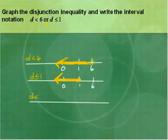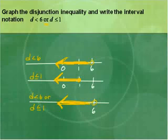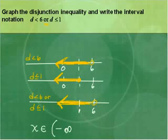Putting the two graphs together — for OR, you combine everything. When we do that, we have an open circle on six moving to the left, which covers the one, so we don't need to show it separately. The solution is an open circle on six moving to negative infinity. The interval notation is (−∞, 6), with a parenthesis because it has an open circle.